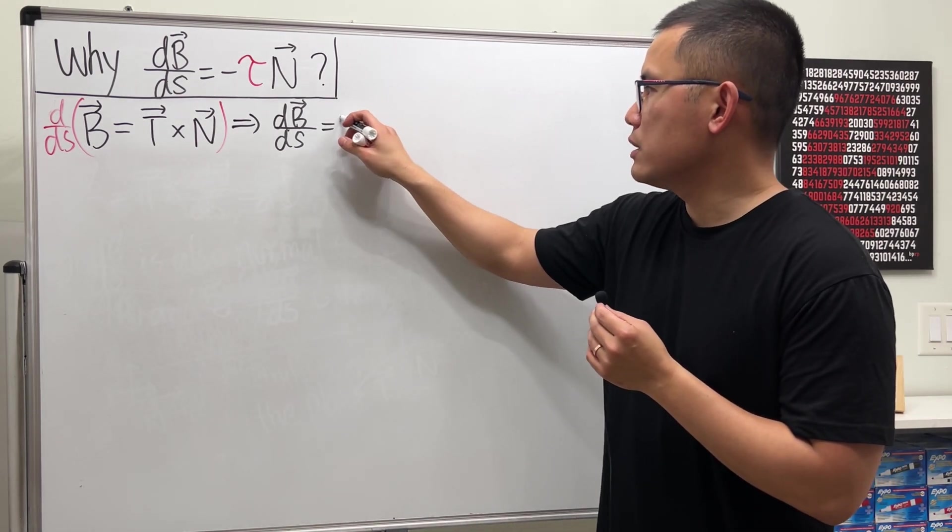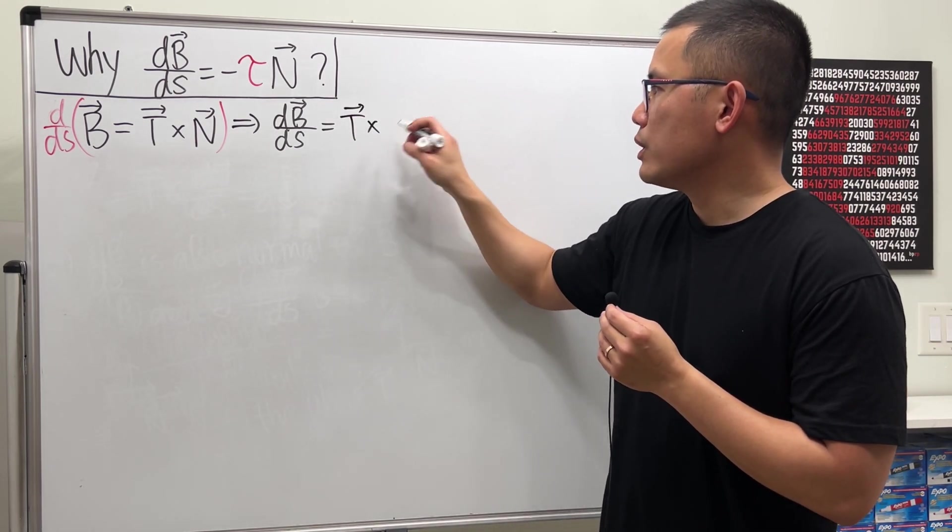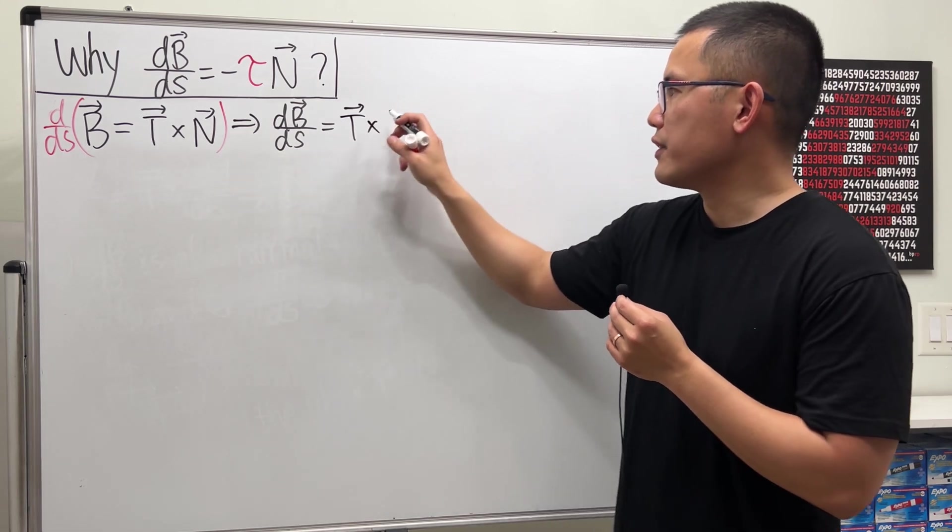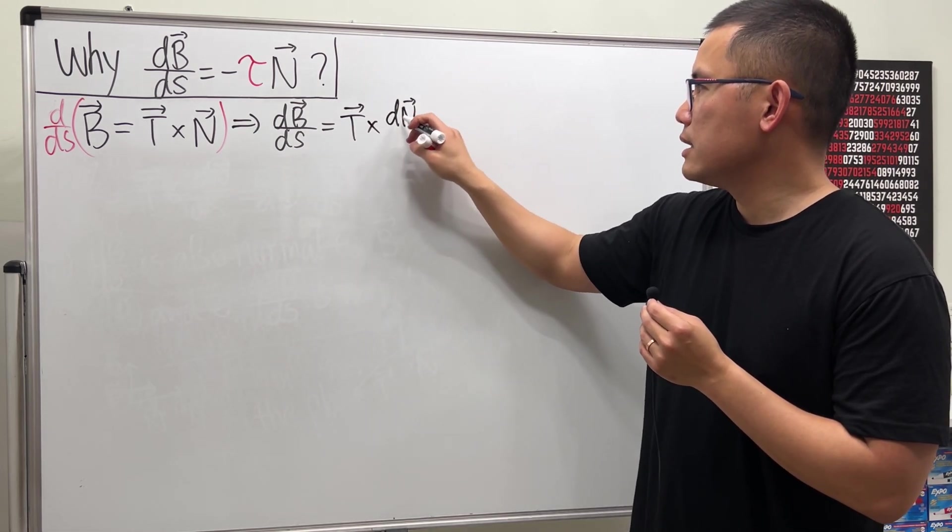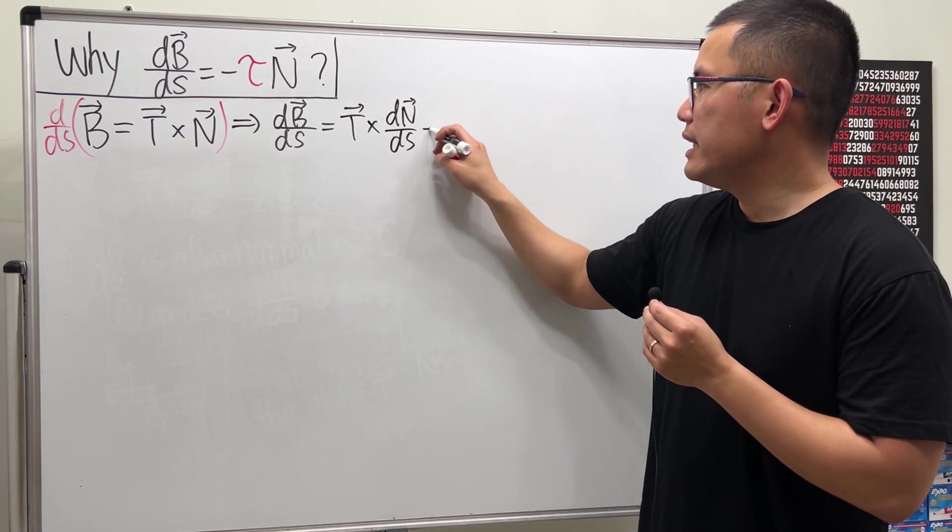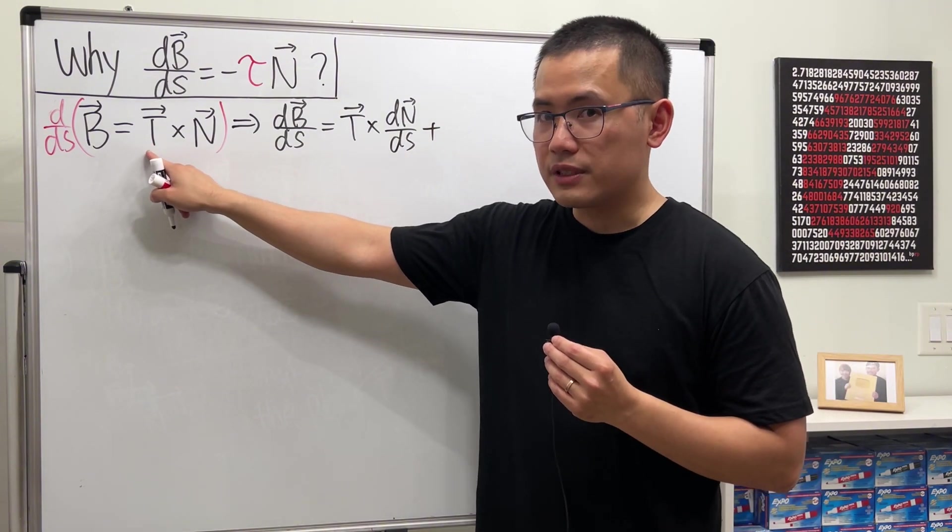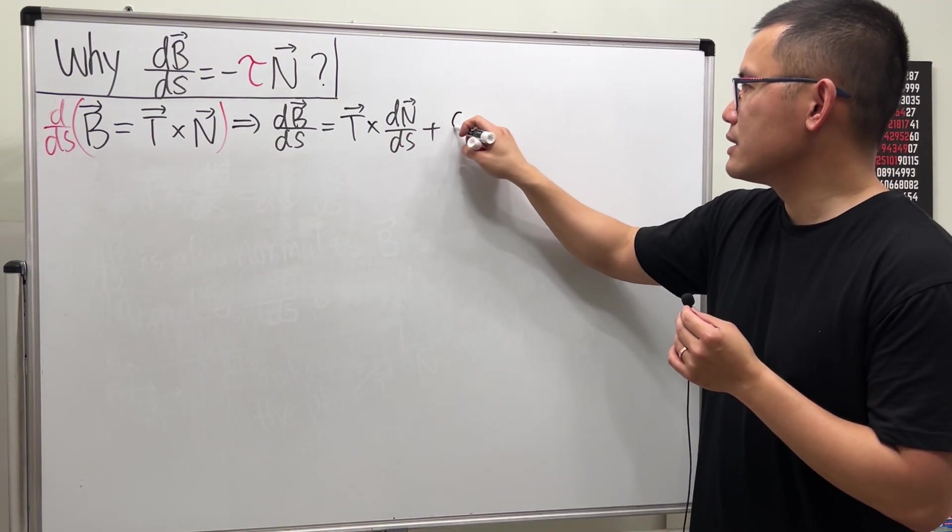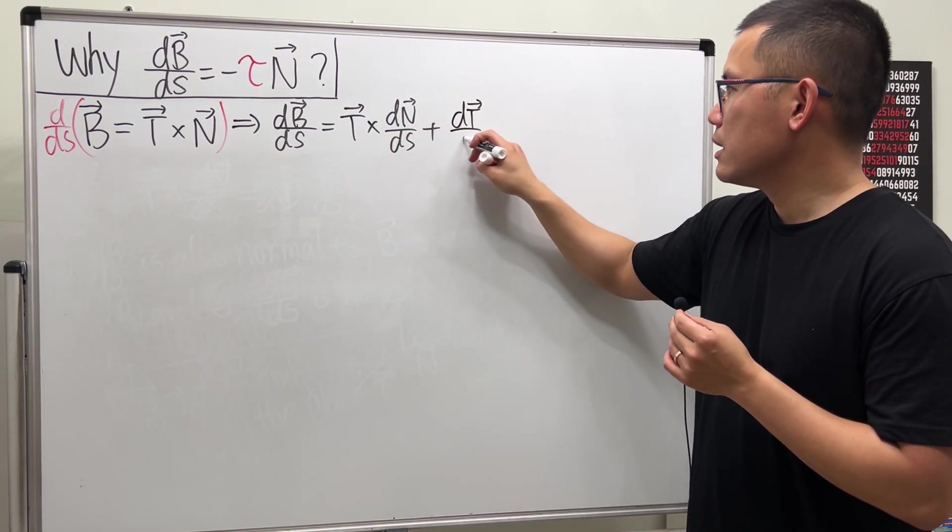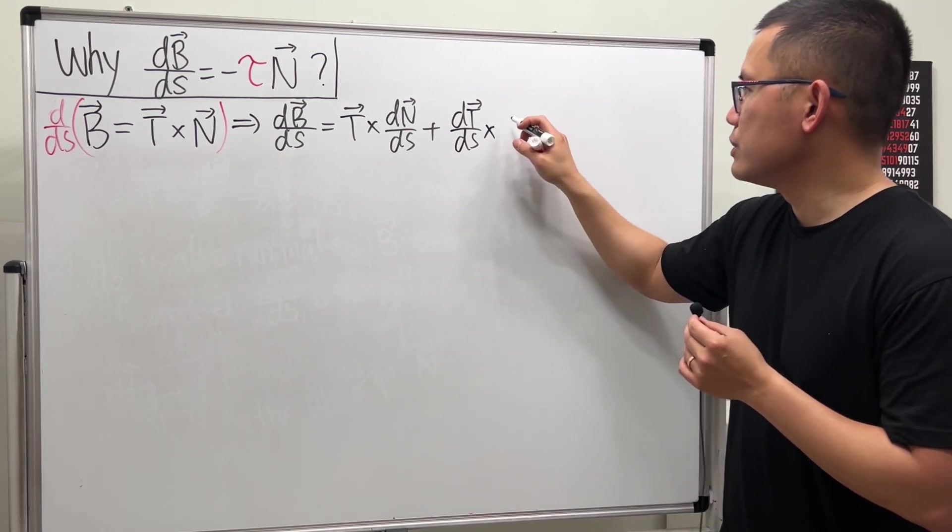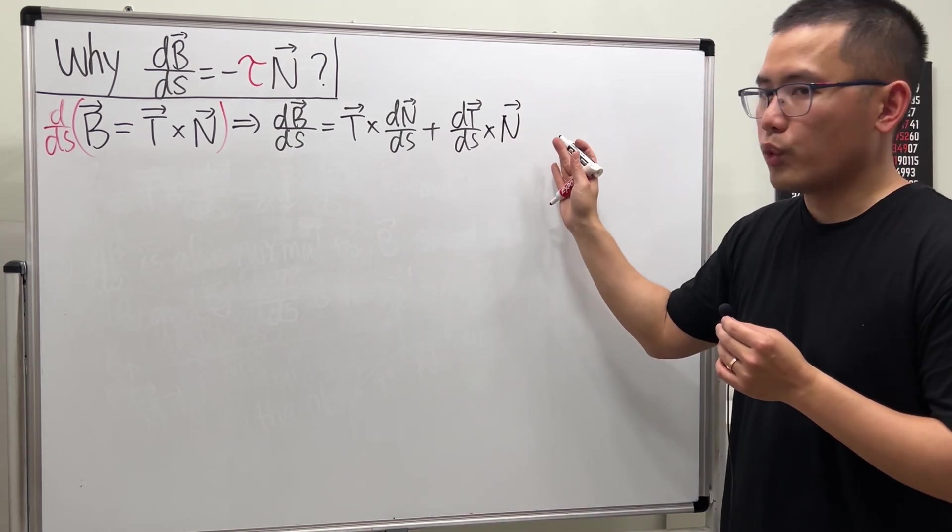I'm going to keep the first function, which is T, and then we do the cross product of the derivative of the second, so that's dn/ds. And then we add the derivative of the first, and we have to write that down first, and then do the cross product of the second one, which is N, in this order.